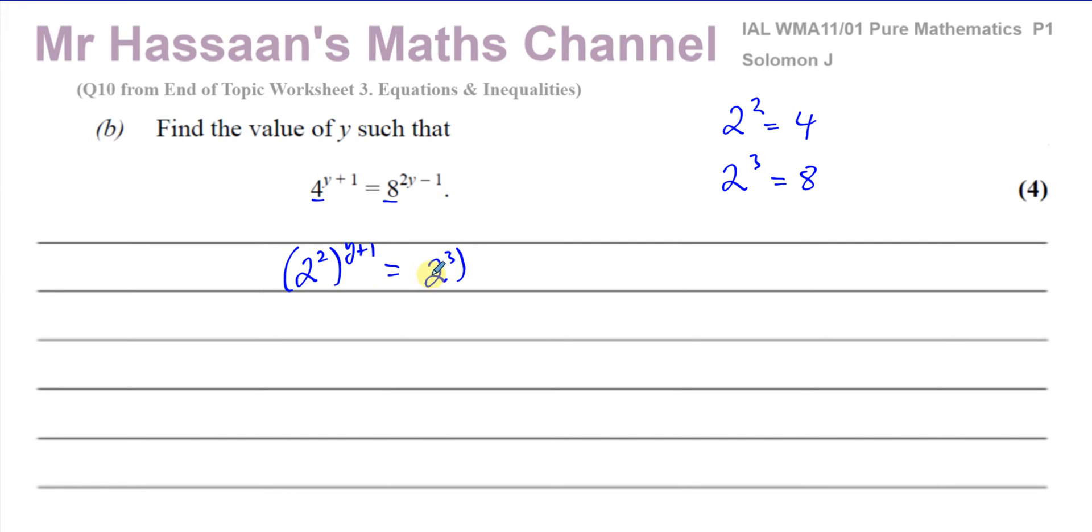If you remember from the laws of indices, when you have something raised to a power raised to another power, it's like you multiply those powers together. So I have to multiply 2 and y plus 1, so I have 2 to the power of 2 times y plus 1 equals 2 to the power of, and this is 3 times 2y minus 1.